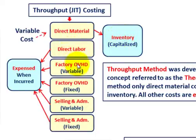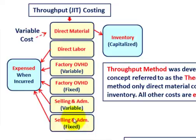Direct labor, factory overhead (both variable and fixed), and selling and administrative expenses (both variable and fixed) — all of these go into expense. They get expensed when they're incurred.